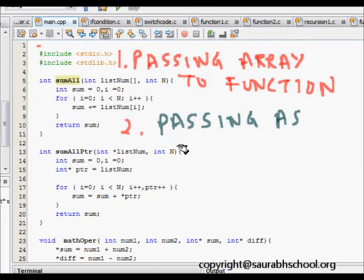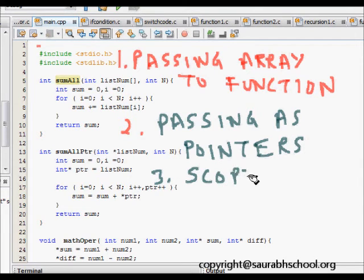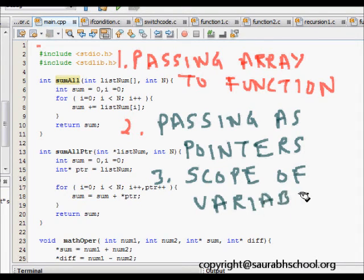Passing as pointers, and the last thing was scope of variables. So these were the three things that we learned.